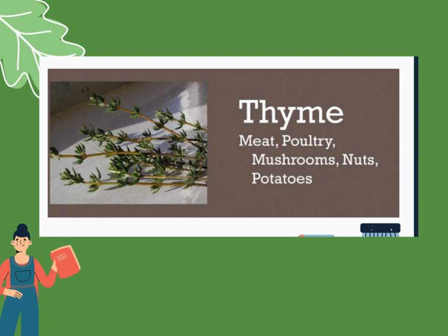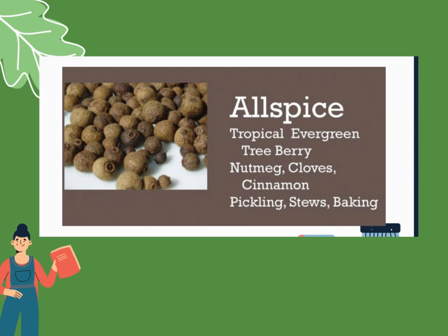Now let's proceed to spices. These are examples of spices. Number one: allspice. It is a tropical evergreen. It includes nutmeg, cloves, and cinnamon. It's used for pickling, stew, and baking. You can buy this in a supermarket, usually dried and fresh.